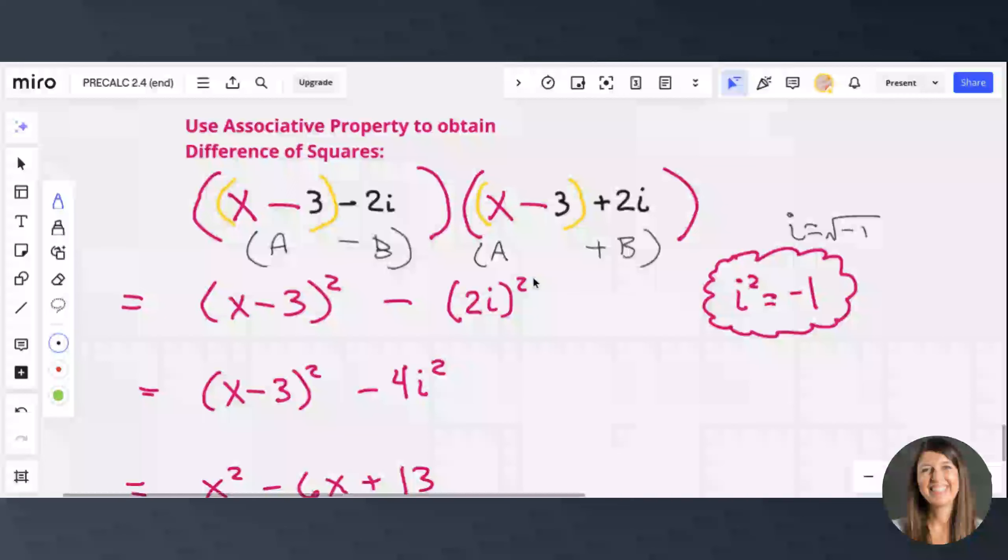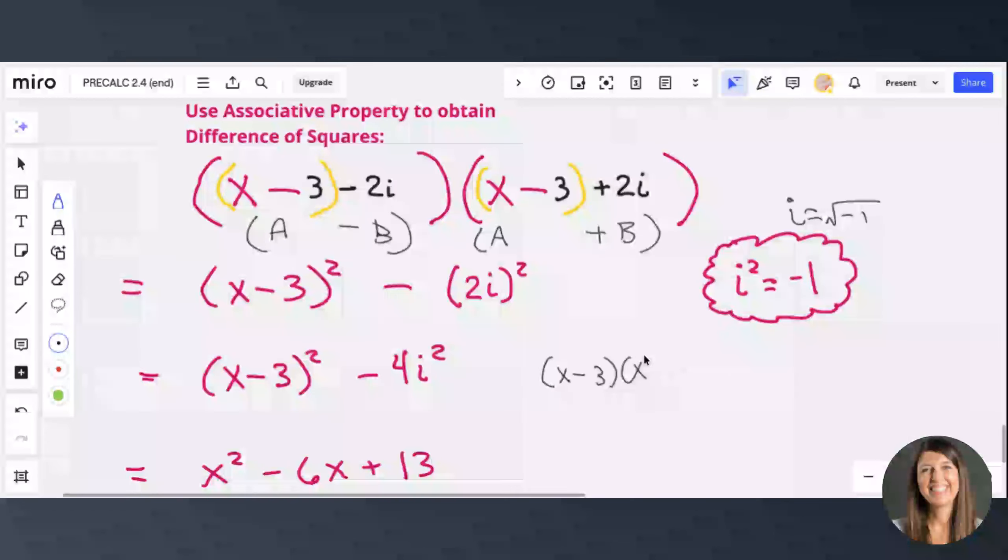And then we've got to foil out the x minus 3. You can't just say x squared minus 9. x minus 3 squared is x minus 3 times x minus 3, which is going to be x squared minus 6x plus 9. So this does not equal x squared minus 9.